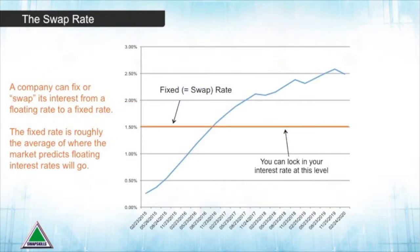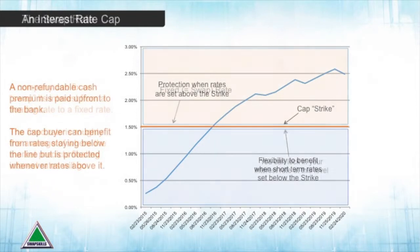The swap rate or fixed rate is roughly the average of where the market thinks floating rates will go. What if you think rates will stay low but want to play safe and put some sort of protection in place? This is where the borrower can also use a cap, where for a non-refundable premium paid up front, they can benefit from low rates but be covered by the bank whenever rates go above a certain level. We call this level the strike.